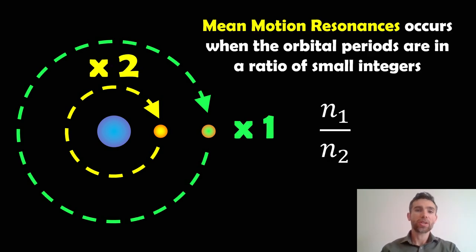Mean motion resonances occur when the orbital periods are in a ratio of small integers. What I've done here is I've put the object on the yellow orbit in a two-to-one ratio: two orbits against one orbit of the object on the green orbit.